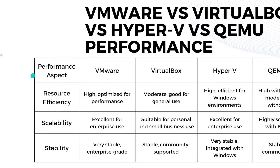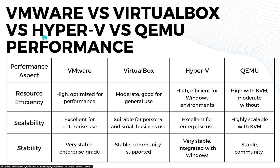Now let's go to performance. When it comes to resource efficiency, VMware offers high efficiency optimized for performance. VirtualBox is moderate, good for general use. Hyper-V is also highly efficient for Windows environments, while QEMU is high with KVM and moderate without KVM.